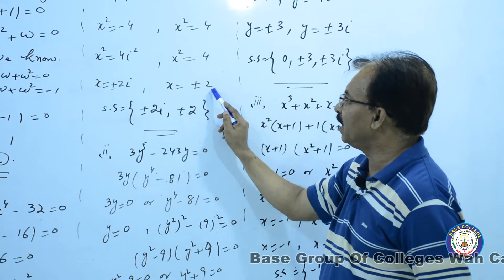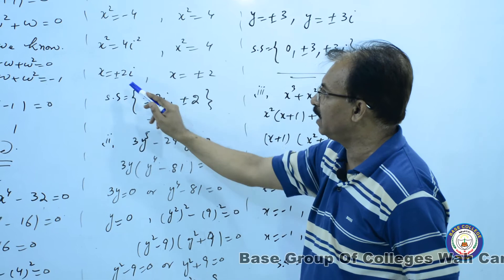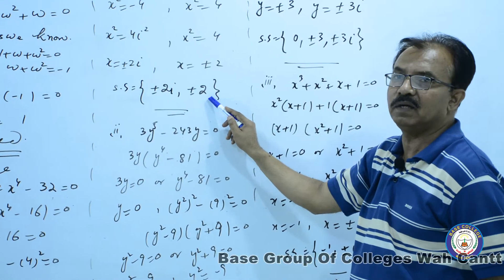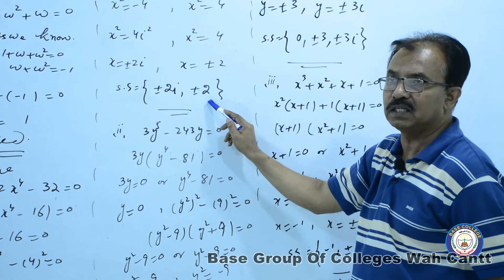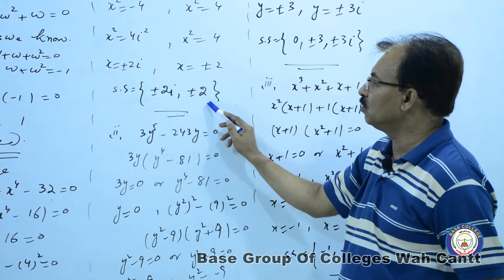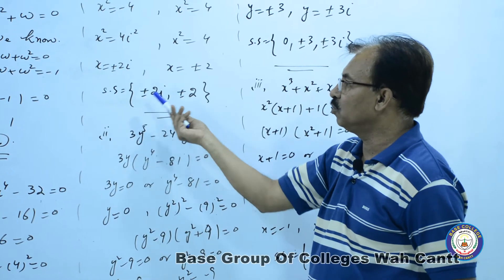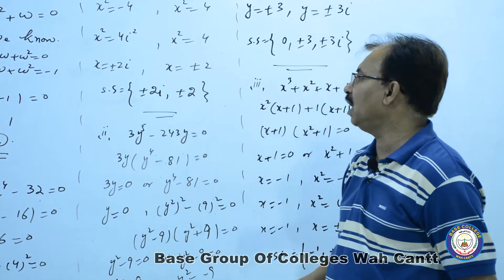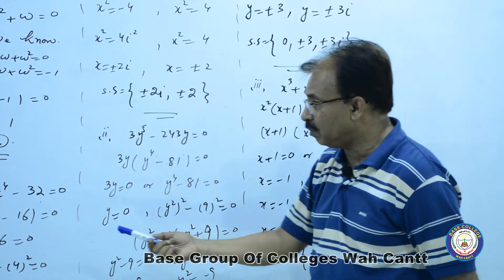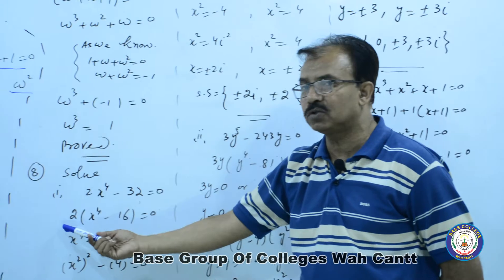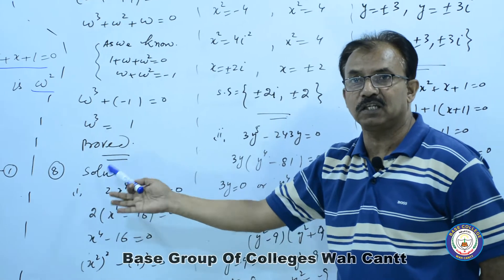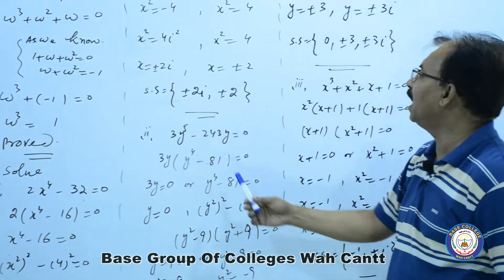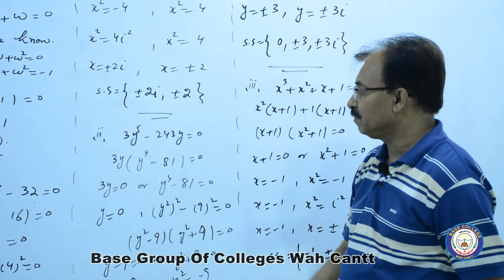اب اس میں سے plus minus two کو پہلے لکھ دیں اور plus minus two i کو بعد میں، اس سے کوئی فرق نہیں کیونکہ دونوں roots x کی values ہیں۔ جو بھی آپ arrangement کر سکتے ہیں۔ یہاں جو میں نے common لیا تھا وہ two constant لیا تھا، اس لیے وہ solution set میں شامل نہیں ہے۔